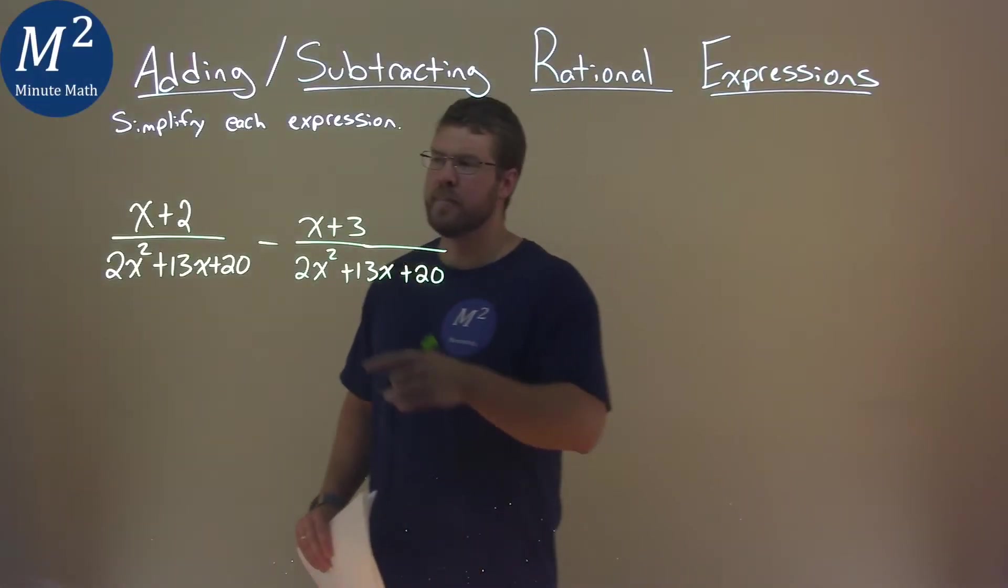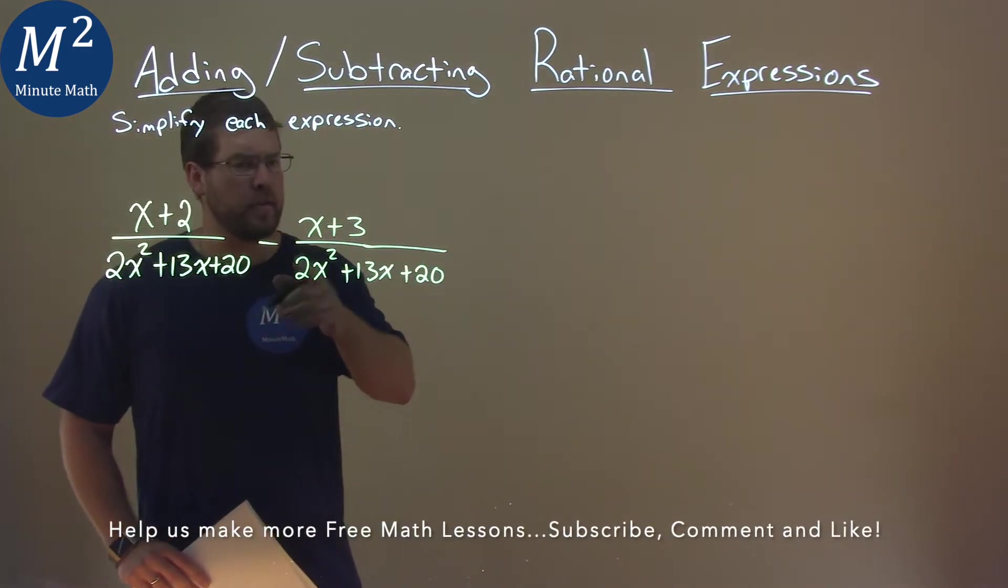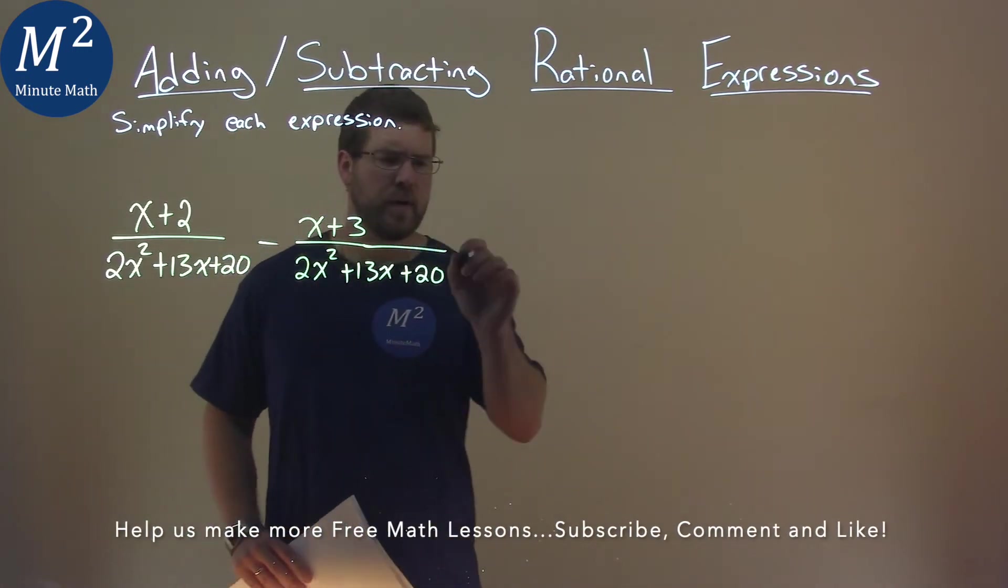We're given this problem right here. x plus 2 over 2x squared plus 13x plus 20 minus x plus 3 over 2x squared plus 13x plus 20. And we've got to simplify this.